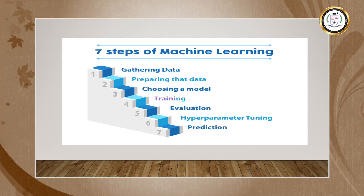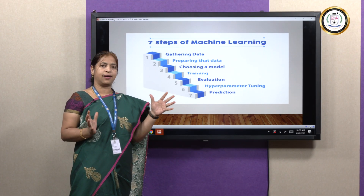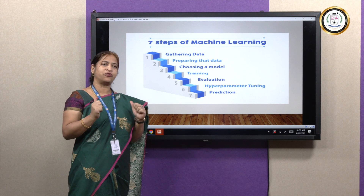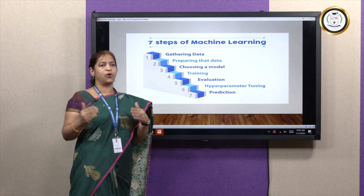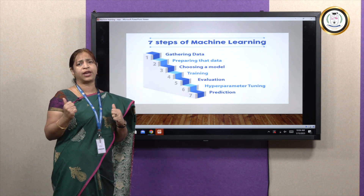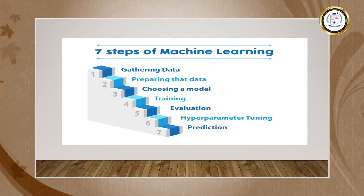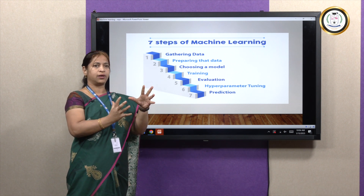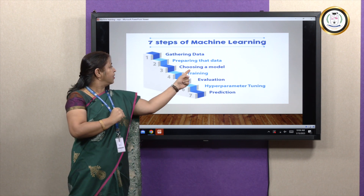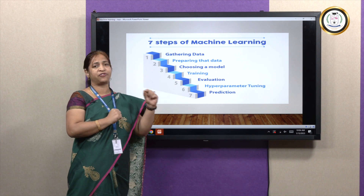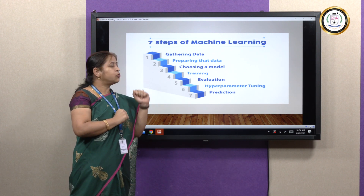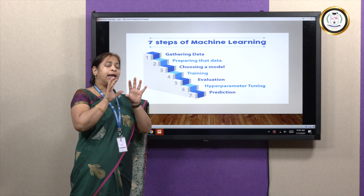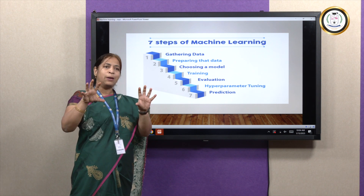Next, we have to train the model. In general, we take the data and split it as 80 percent for the training set and 20 percent for the testing set. It is not a thumb rule — you can also go with a 70-30 combination. Training means we feed the 80 percent of data, which includes both input and output, into the system using the selected model — whether classification or clustering — so the system will be trained. Behind the scenes, it tries to find the relationship between input and output.